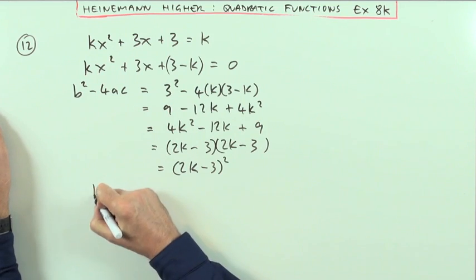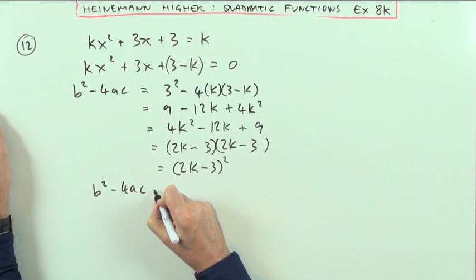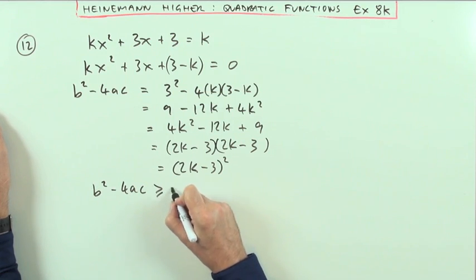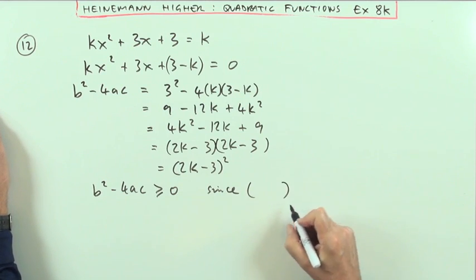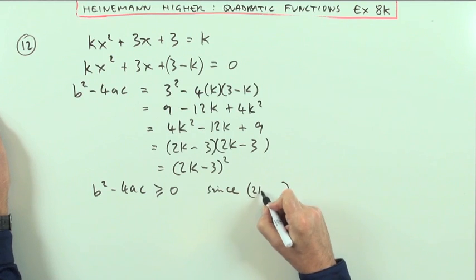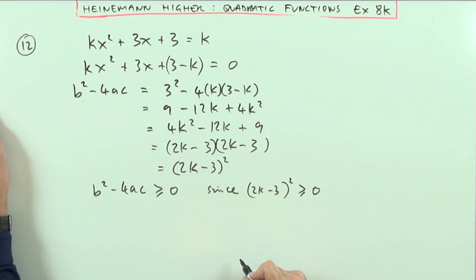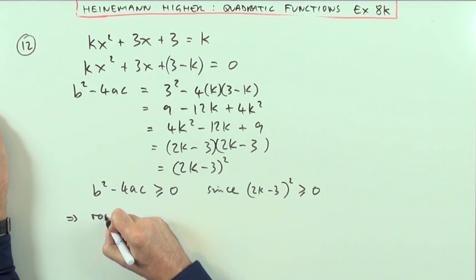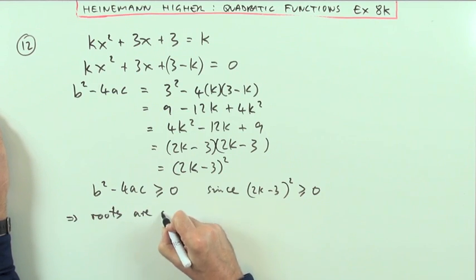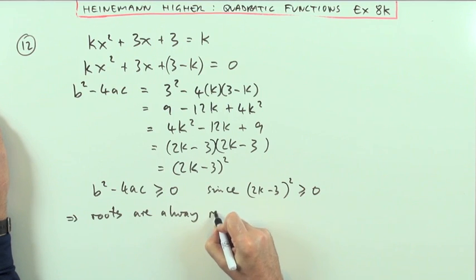So how do I express that? I'll just say this: b squared minus 4ac is always greater than or equal to 0, since any square is always greater than or equal to 0. I can't just put anything square, but I'll just specify it, since that must be greater than or equal to 0. And if the discriminant is always greater than or equal to 0, that means that the roots are always real.